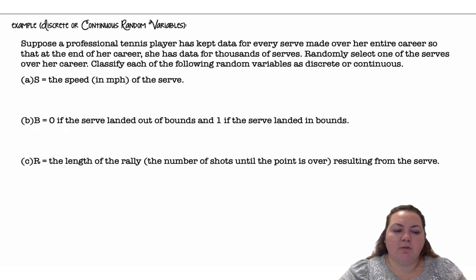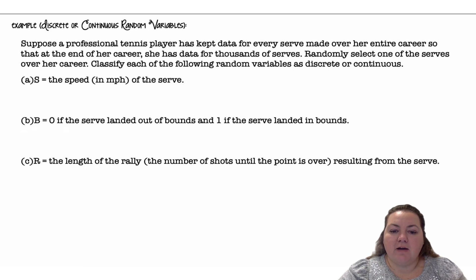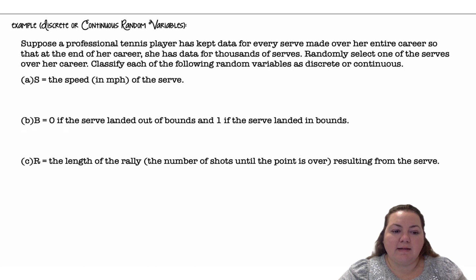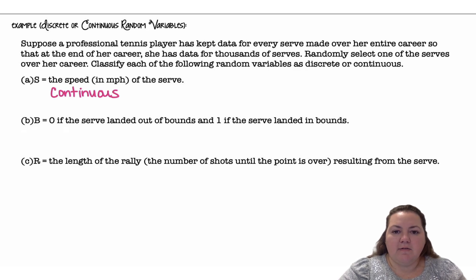Now let's decide between discrete or continuous random variables. Suppose a professional tennis player has kept data for every serve over her entire career — thousands of serves. We randomly select one of these serves and classify each random variable as discrete or continuous. Variable S, the speed in miles per hour of the serve, is continuous — it can take on any value, including decimals, down to very precise measurements.